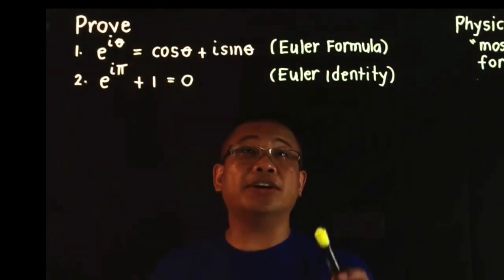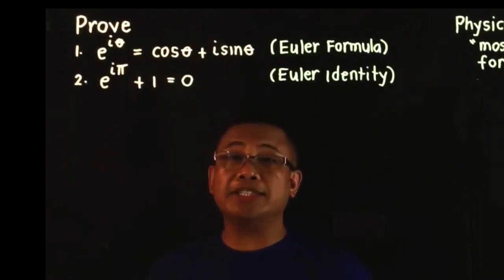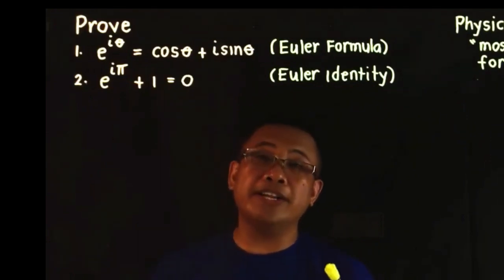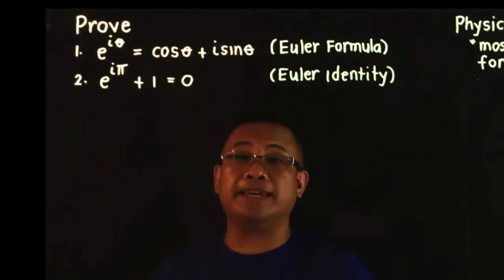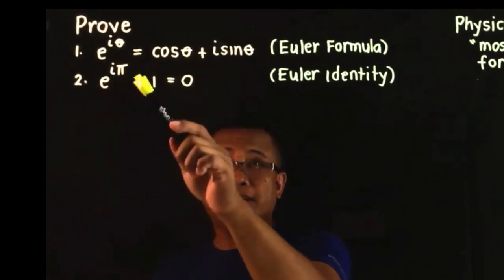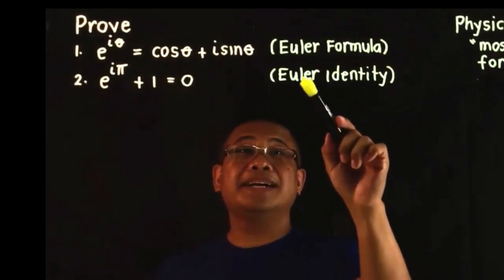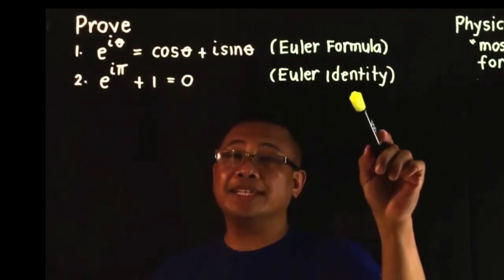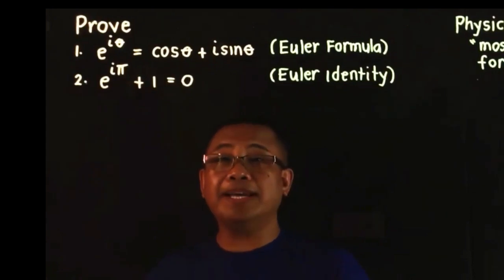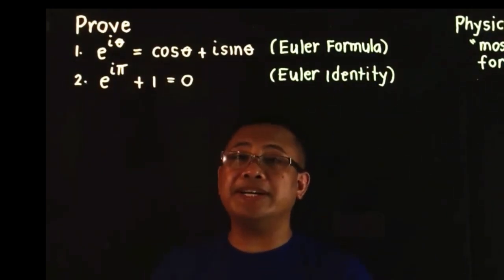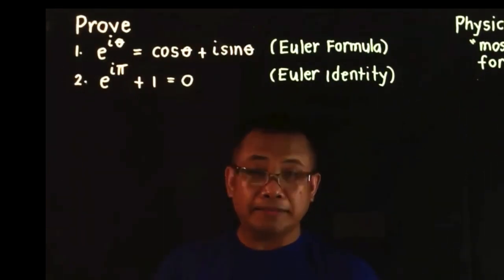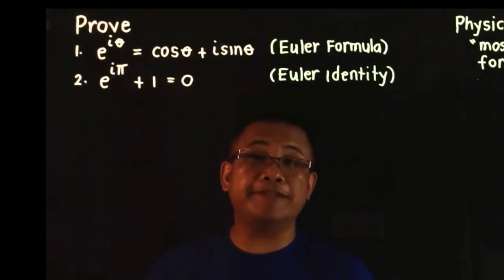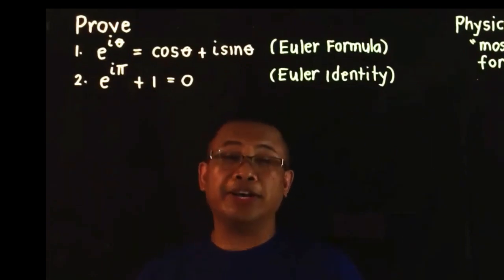This video is part of the series on Euler formula. In the previous video, we already talked about the Maclaurin expansion of sine θ, the Maclaurin expansion of cosine θ, and the Maclaurin expansion of the natural number E. In this video, our task is to prove the Euler formula and derive the special case of the Euler formula, which we call the Euler identity. Normally, this Euler formula is derived using power series and the Maclaurin expansion of sine, cosine, and the number E. But today, I'm going to use a first-order differential equation in order to prove this Euler formula.